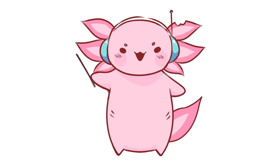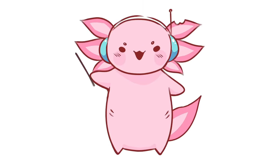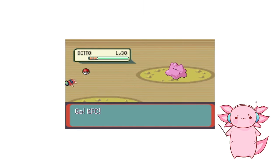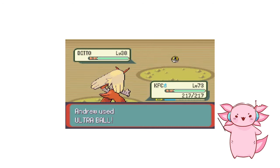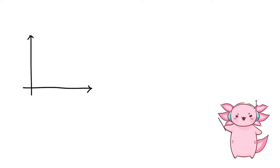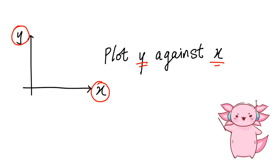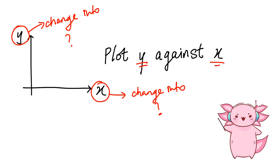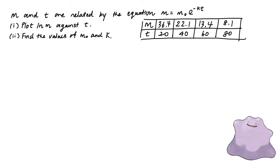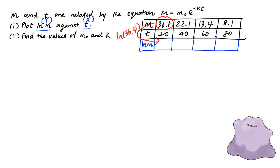You know Ditto, the Pokémon? It can transform into any Pokémon and steal their moves. For linear law, we pull a Ditto move and transform the x and y axes into something completely different. For example, the first part wants us to plot ln M against T. Our y-axis is now ln M and our x-axis is T. We make a new ln M row in our table, fill it in, and plot the points on graph paper.